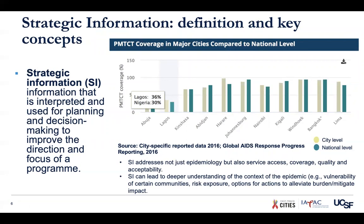Strategic information is a concept above the level of surveillance, and it can lead to deeper understanding of the context of the epidemic, the vulnerability of certain communities, the risk exposures, and the options for actions to alleviate burden or to mitigate the impact of the disease.